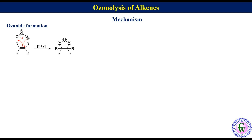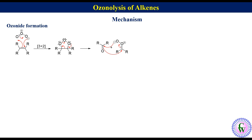The primary ozonide is unstable and undergoes decomposition to produce a carbonyl compound and a carbonyl oxide. The carbonyl carbon has partial positive charge and oxygen partial negative charge, while carbonyl oxide has negative charge on oxygen. So they cannot recombine in this orientation. Rotating the carbonyl compound 180 degrees allows recombination via 3+2 cycloaddition to produce the secondary ozonide, also called 1,2,4-trioxolane.